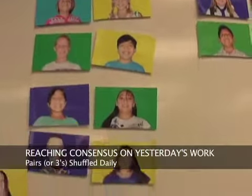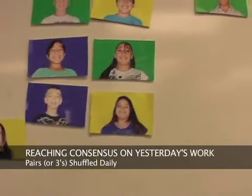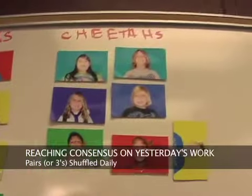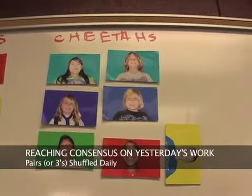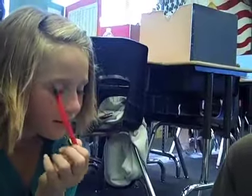The students are shuffled every single day so that they're always working with different partners. They meet with that student to go over yesterday's math work in what we call reaching consensus. Rather than the old method of swap and correct or collect and correct, the students get feedback on their work by having a discussion with their consensus partner. Whenever they find that their answer is different, one of the students has to change their mind and then change their paper using a pen for accountability purposes.